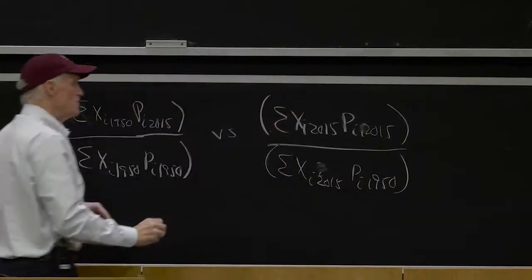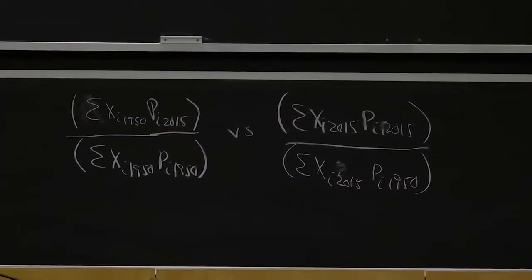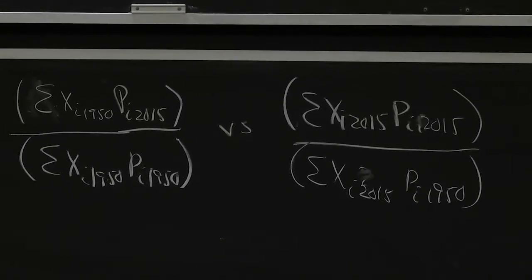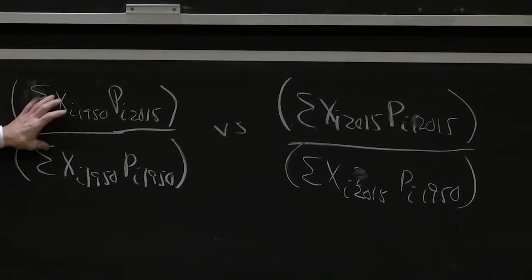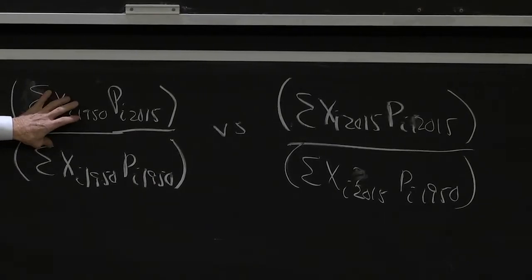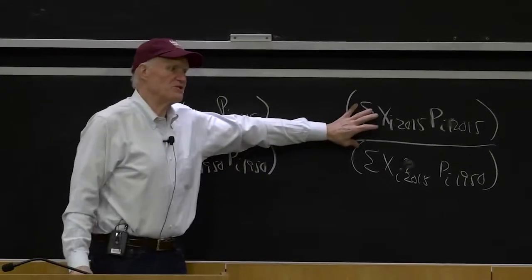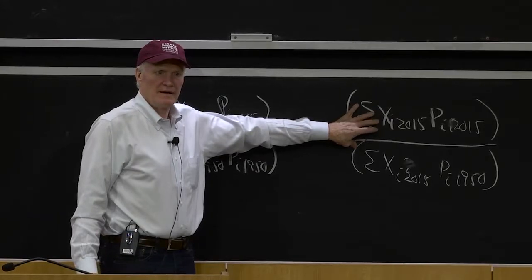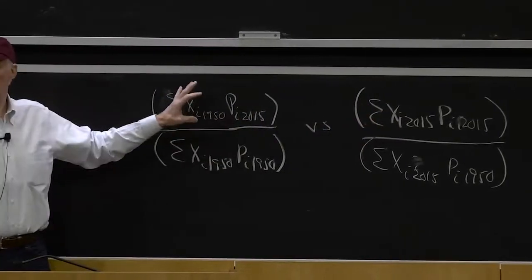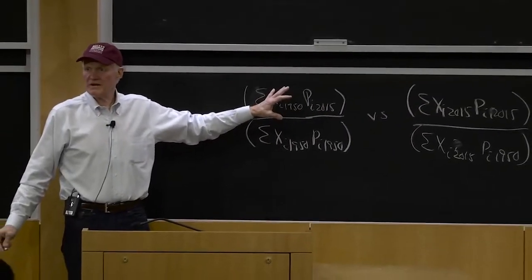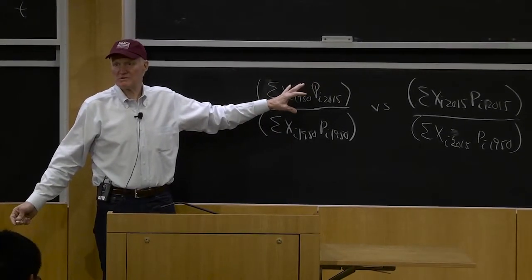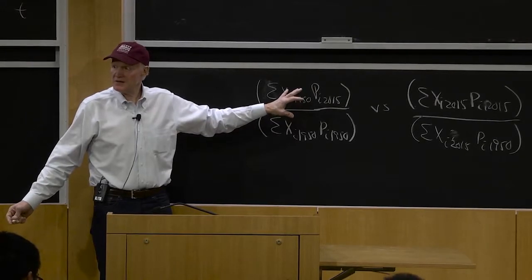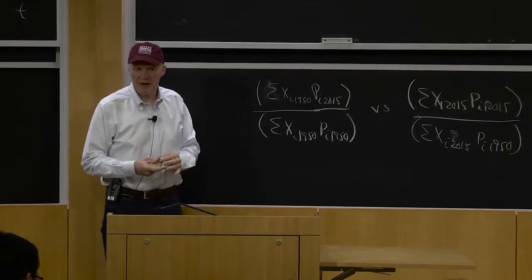So there would be two alternative measures of the growth in prices from 1950 to today that used two different bundles, the bundle of what we consumed in 1950 and the bundle of what we consume today. And the answer is these would give me such dramatically different measures of the cost that they'd be basically useless, right? Everybody understands why these would be essentially useless, right?